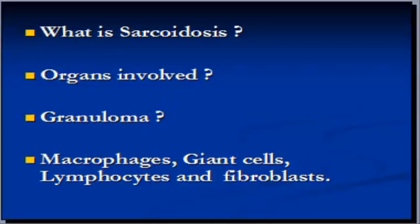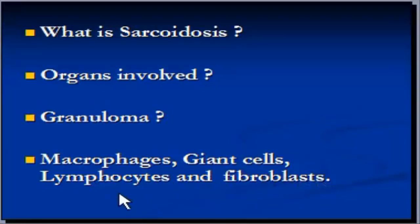So what is a granuloma? A granuloma means a nodule or a lump in simple English. These nodules, or granulomas, are clusters of white blood cells known as macrophages and giant cells. A macrophage is a white blood cell. A giant cell is made by a union of several macrophages and can easily be recognized microscopically because of multiple nuclei in them.